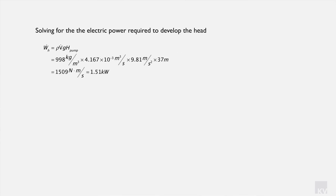Next we solve for the electric power required to develop the head. The rate of work to develop the head equals density × volumetric flow rate × gravity × pump head. Substituting the known density, volumetric flow rate, gravity of 9.81 m/s², and the head of 37 m, we determine that the work required to generate the head is 1.51 kilowatts.